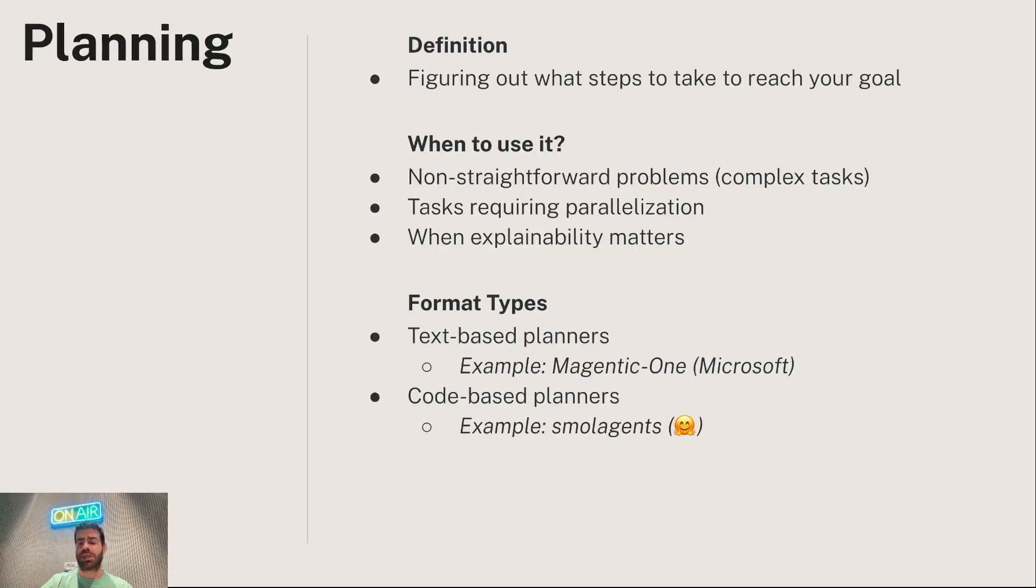And what is planning that we're talking about that every AI agent essentially needs to do? So it's figuring out the steps that you have to take to reach your goal. And when do you want to use it is when there is no straightforward problems, essentially complex tasks, and that it requires parallelization and explainability, rather than ReAct, where you can't really understand what happened.